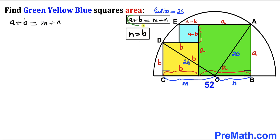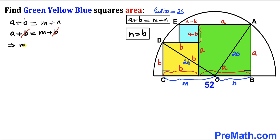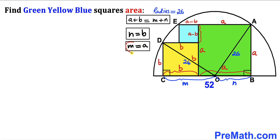Recalling a + b = m + n and substituting n = b, we get a + b = m + b. Canceling b from both sides gives m = a. So m equals lowercase a and n equals lowercase b.